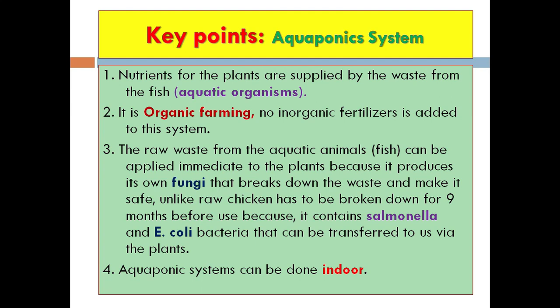With this type of farming, the waste from the fish can be used immediately to fertilize the plants. Unlike chicken waste, you do not use raw chicken waste on plants — you allow it to break down for nine months because Salmonella and E. coli bacteria present in raw chicken waste can be contracted by humans. With aquatic animal waste, you can use it immediately because it produces its own fungi that break down those harmful bacteria. Number four: the aquaponics system can be done indoors, uses less land space, and can be done vertically.